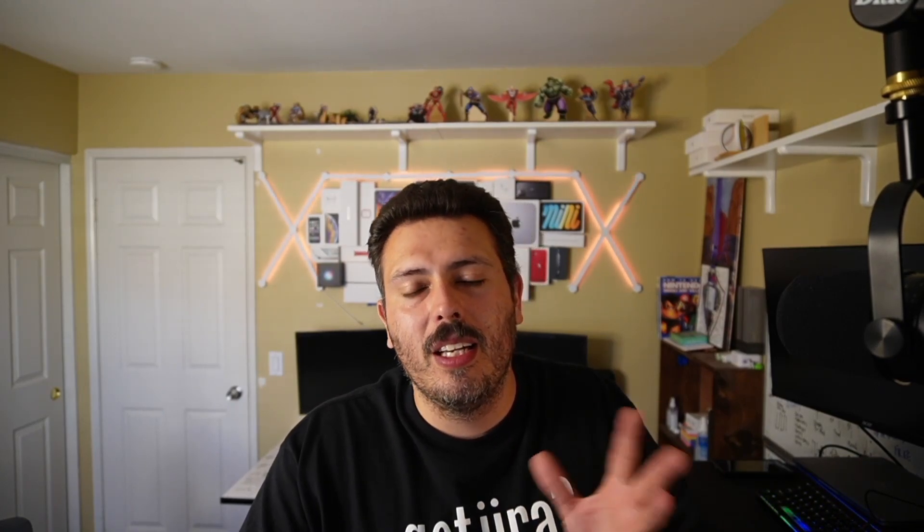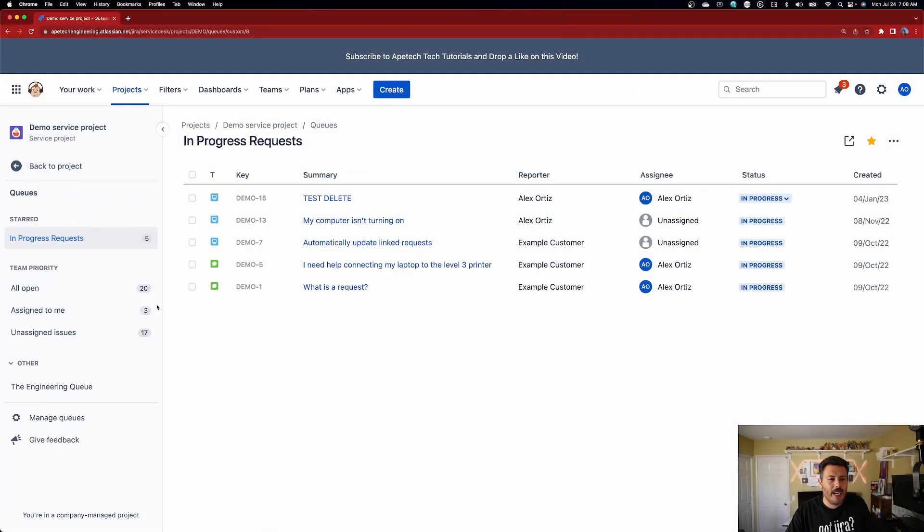I picked the general IT template — not the ITSM one, which is usually more complex and sophisticated. This is the very basic general IT template for the JSM project, and this is just how it works here. Once you create your queues, you go back into Manage Queues, put them in the right spot, and then when you click into your queues they'll show up in the right area. You can add whatever queues you want — create a queue for different team members, different statuses, different fields, whatever information you want.